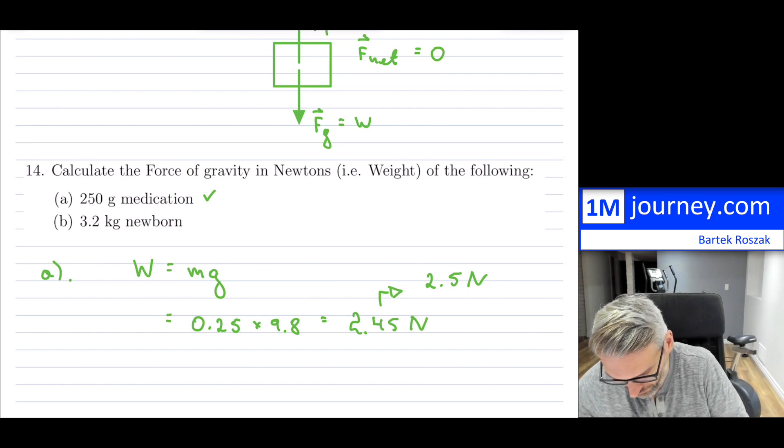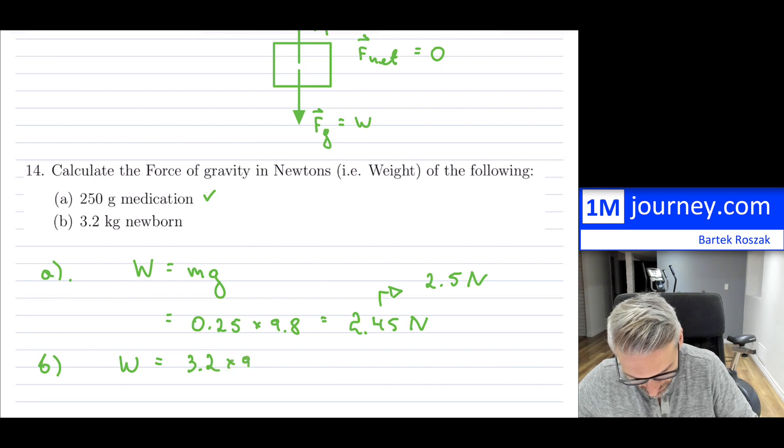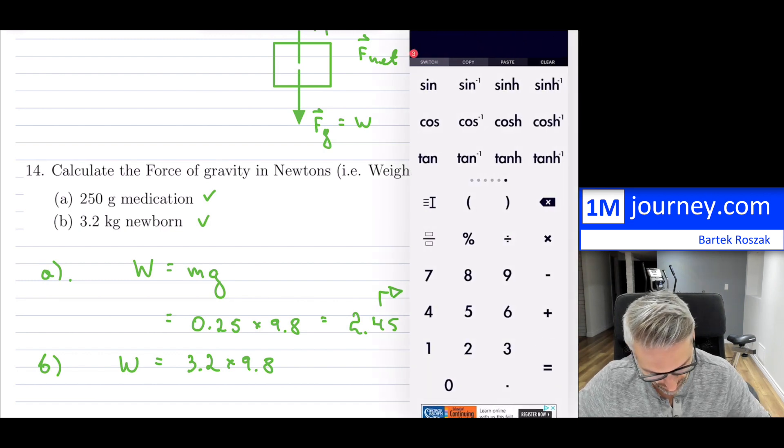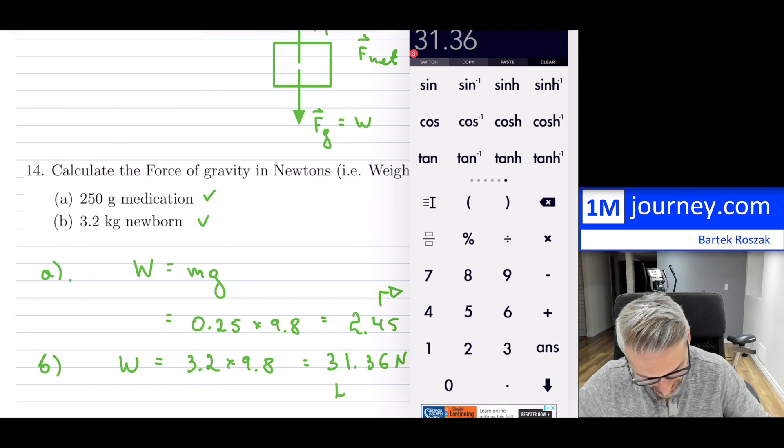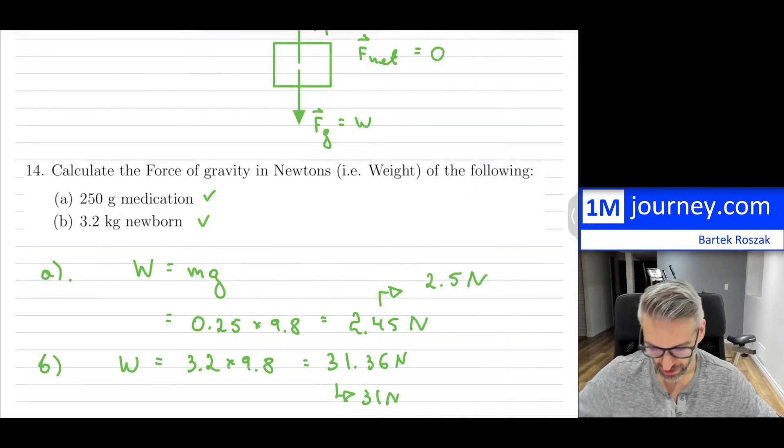The second one, for part b: weight is equal to—this is 3.2 multiplied by 9.8. This is already in kilograms so that one is much easier, we don't have to do any conversions. 3.2 times 9.8, and this would be 31.36 Newtons, and you can put it to 31 Newtons if they want you to round to two sig figs.